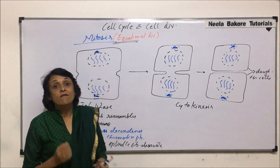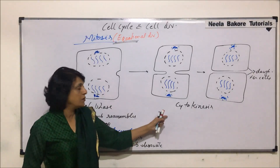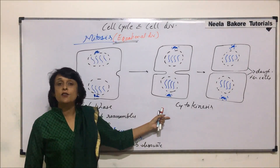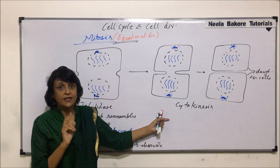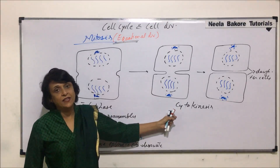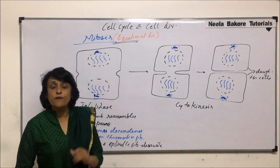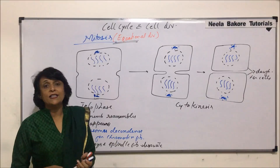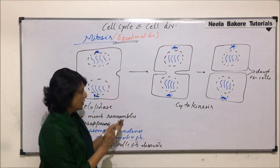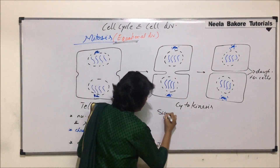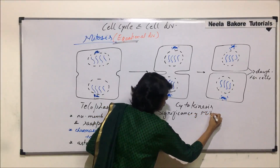We need to know which cells undergo mitosis. Somatic cells undergo mitotic division, and germ cells also undergo this kind of division when they are in the first phase, that is, the multiplication phase. The next important thing is the significance of mitosis.